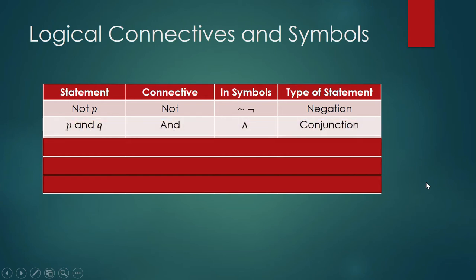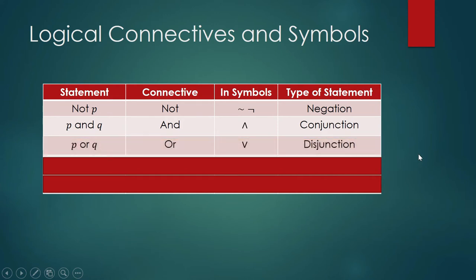For statements p and q, we can connect them through the connective 'and.' The symbol for that is the wedge (∧), and when statements are connected by 'and,' we call that a conjunction. For 'p or q,' the symbol is (∨), and a compound statement formed by 'or' is called a disjunction.